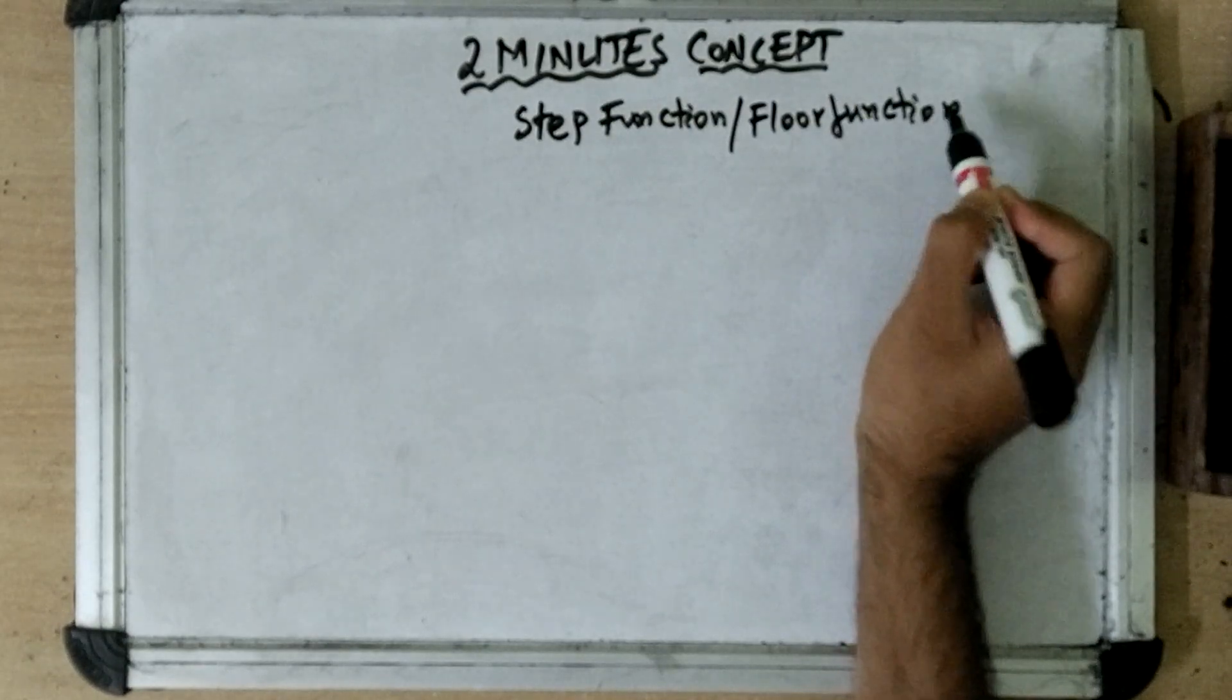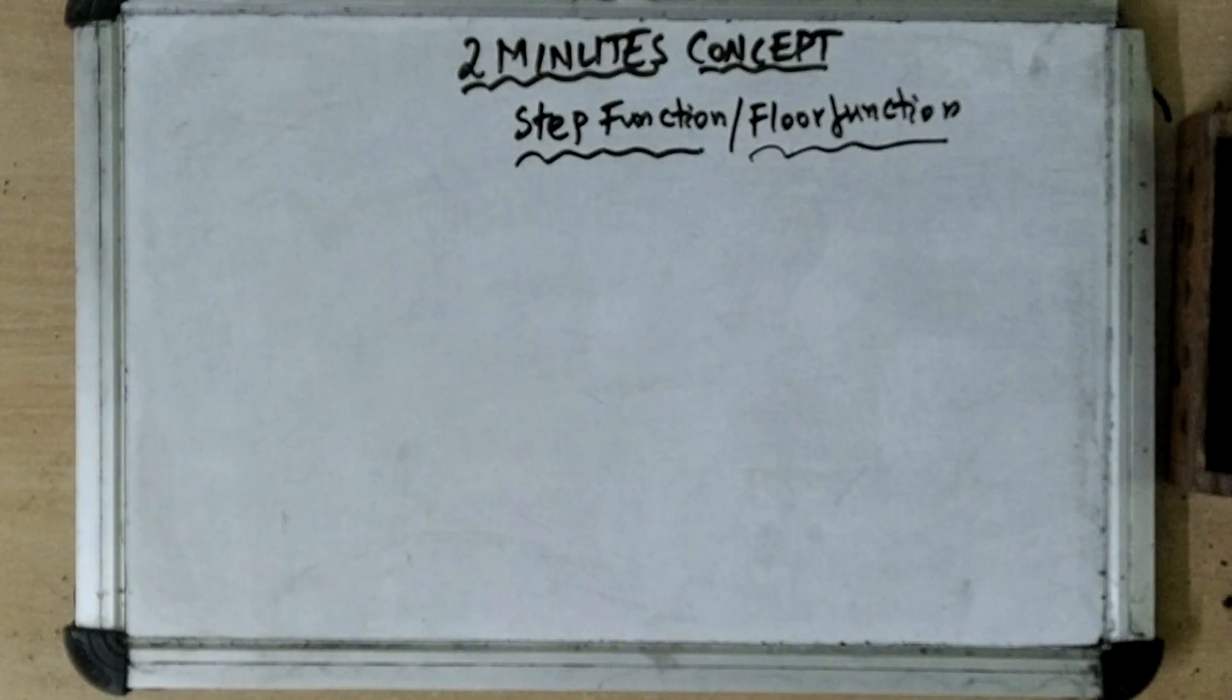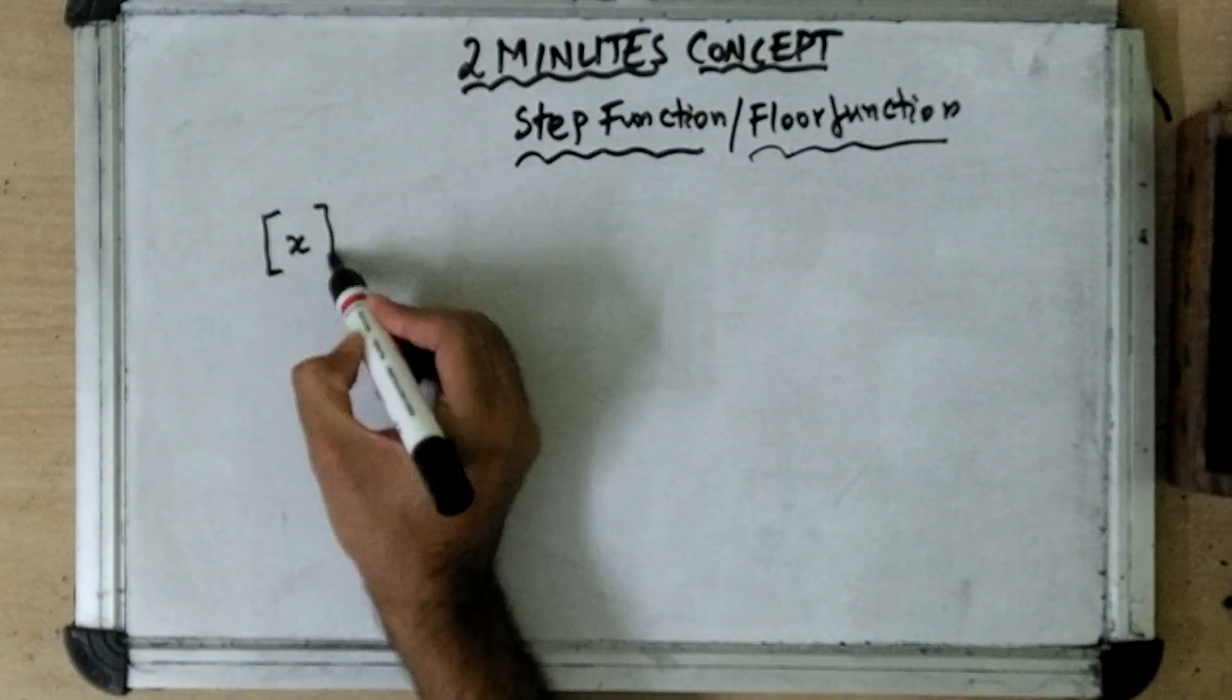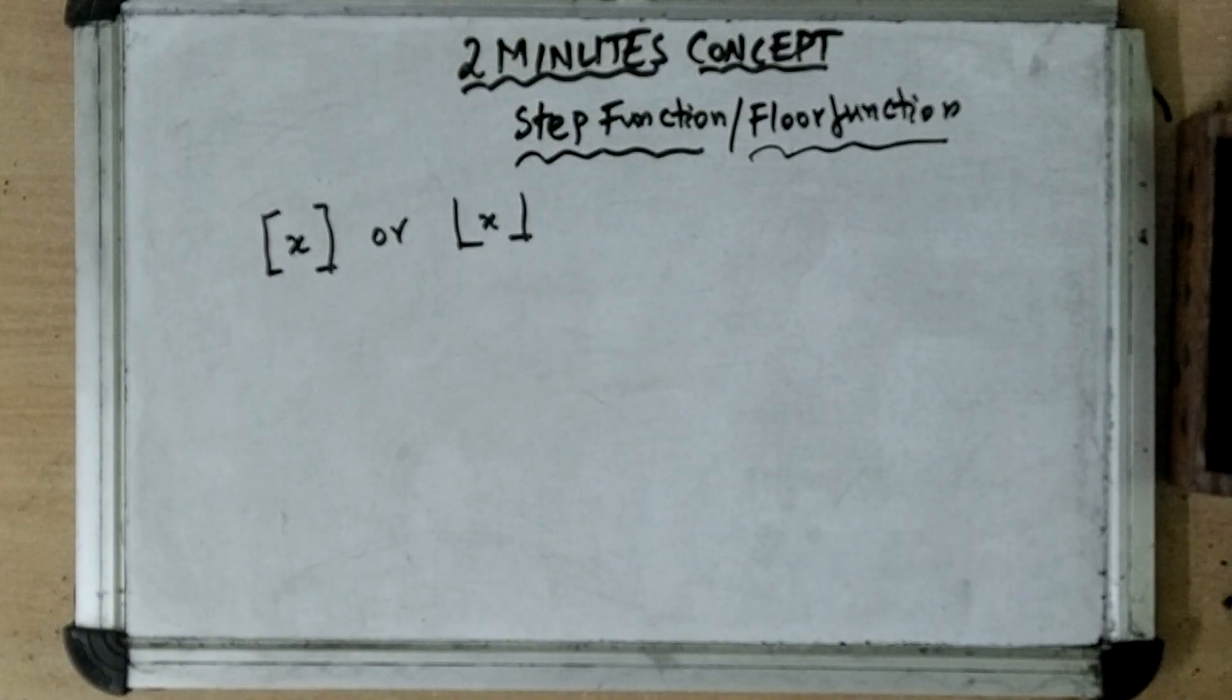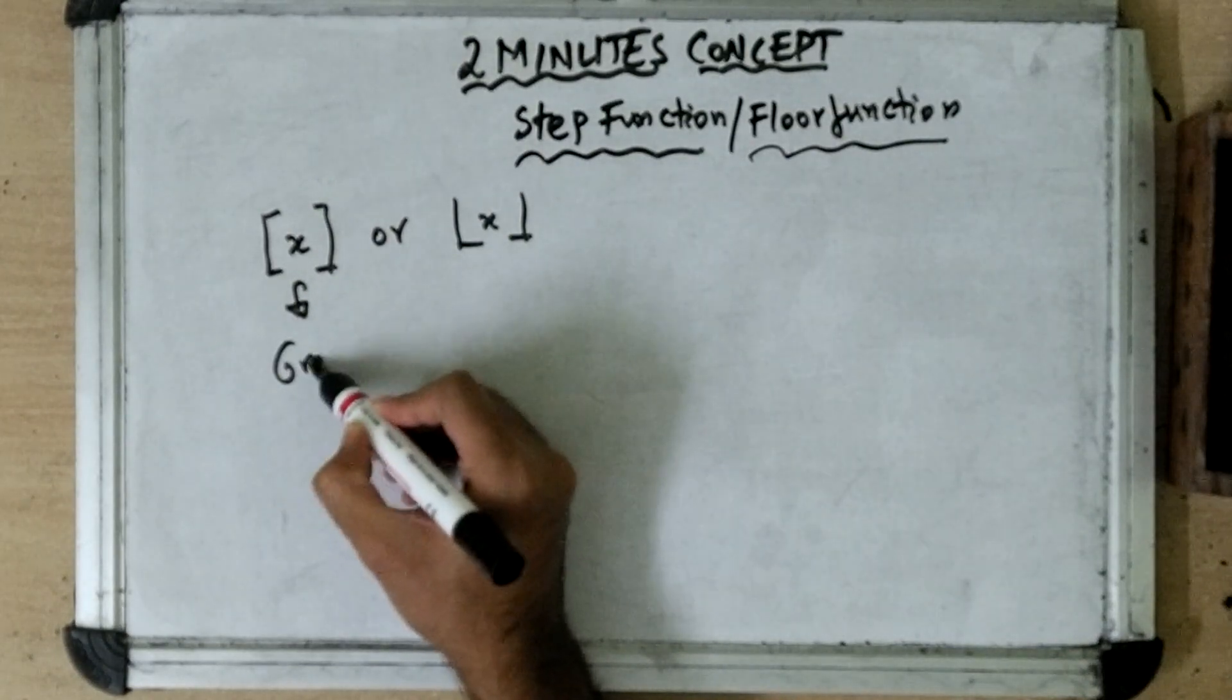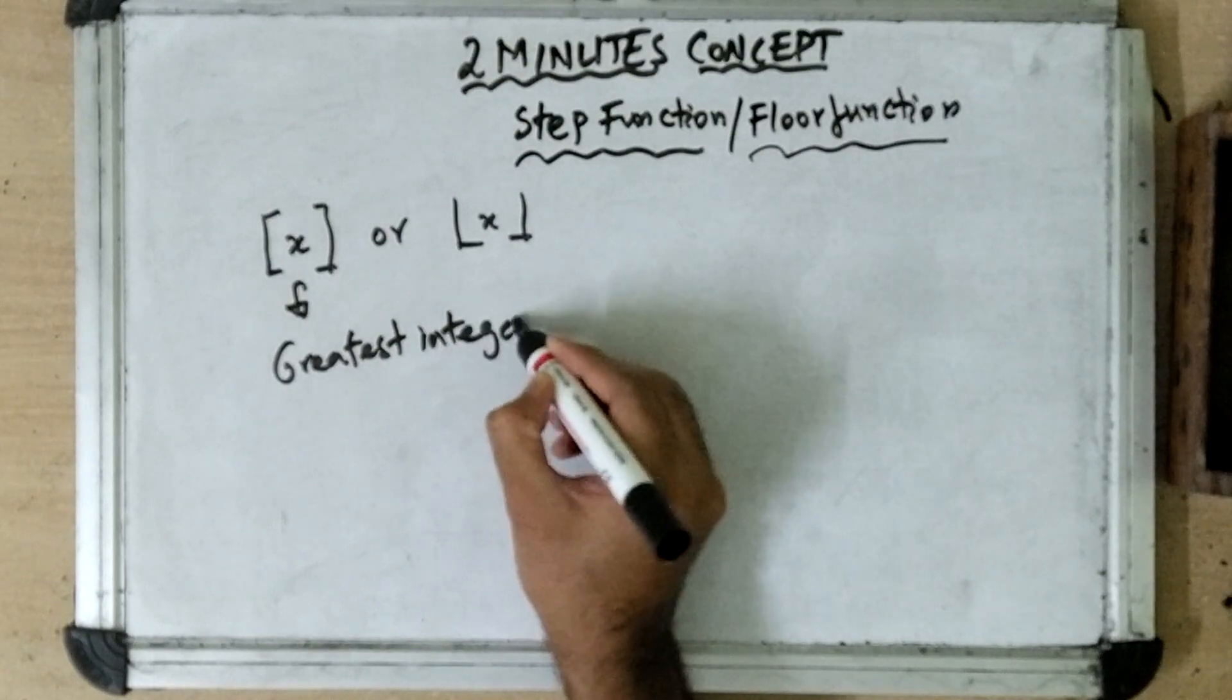We will be discussing this because it is frequently asked in most engineering entrance competitive examinations. A step function is denoted by step x or it is also denoted like this. So what do you mean by step x? Step x is the greatest integer less than or equal to x.